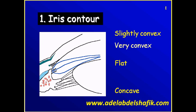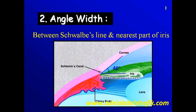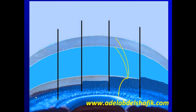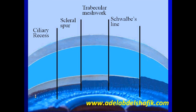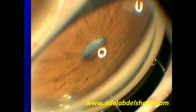The first point is to comment on the iris contour. The second is to assess the width of the angle — the distance between the most peripheral part of the iris and Schwalbe's line, measured in degrees. Then you assess the structures visible in the angle: from everything visible down to the ciliary recess, to nothing visible at the extreme end — giving you a wide angle or a closed angle with grades in between.